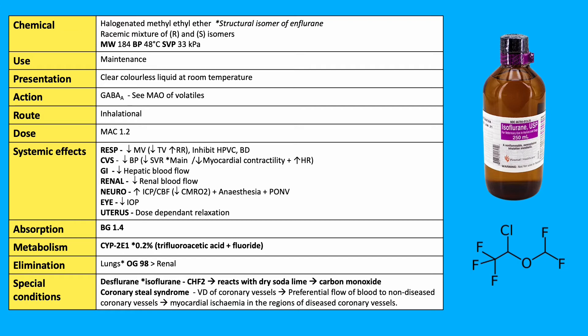The blood-gas coefficient is 1.4. There is minimal hepatic metabolism via CYP2E1, at 0.2%, producing trifluoroacetic acid and fluoride. Elimination is mainly by the lungs. The oil-gas coefficient is 98, with renal elimination of metabolites.